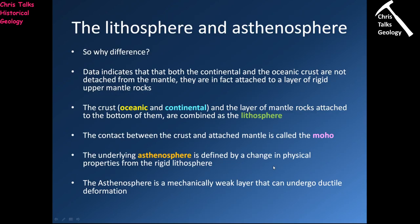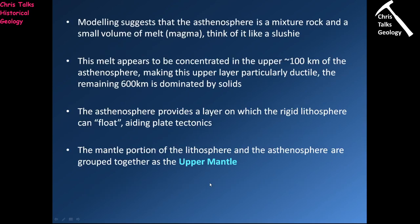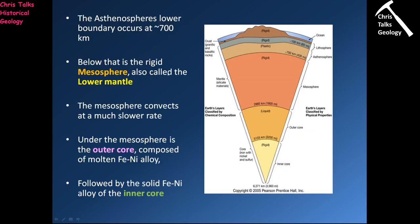To recap: the oceanic crust and continental crust are chemically different but both solid. Attached to the bottom of both is a small layer of mantle rock. Together, the oceanic crust, continental crust, and that small layer of mantle rock are lumped together as the lithosphere. Underneath the lithosphere is a semi-liquid layer on which the lithosphere floats — that is the asthenosphere. Because the asthenosphere and that mantle rock have the same composition, they are sometimes referred to together as the upper mantle. The asthenosphere's lower boundary is about 700 kilometres down. Below the asthenosphere we have the mesosphere, also referred to as the lower mantle, which is solid and made up of magnesium-iron silicates.